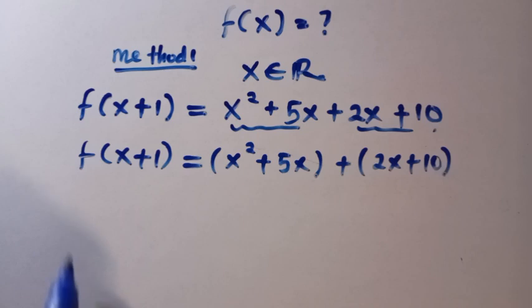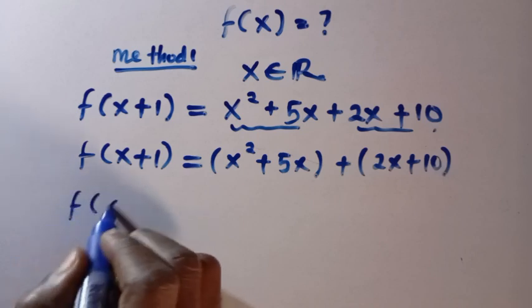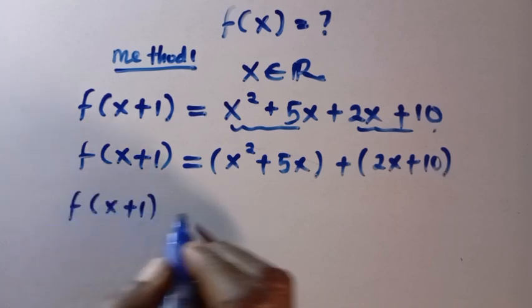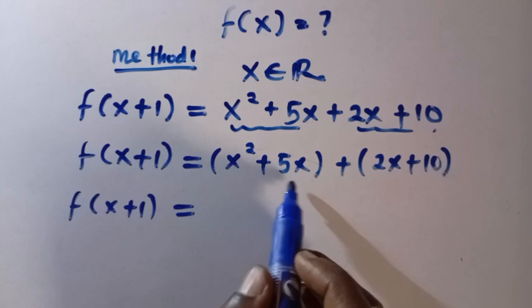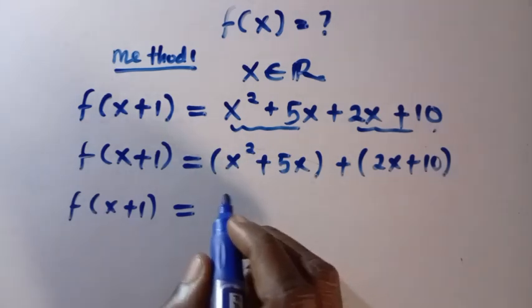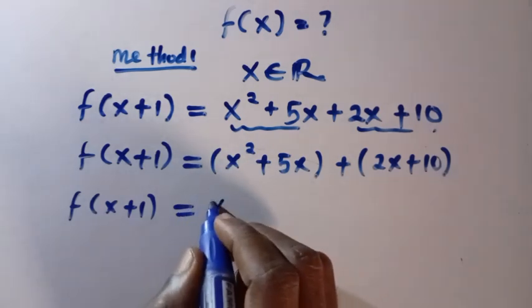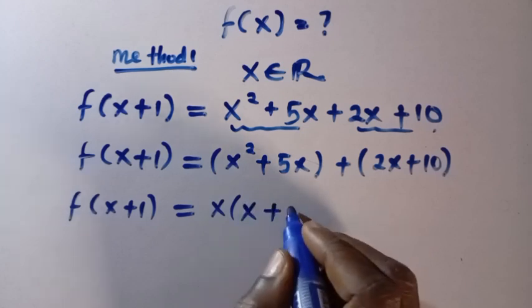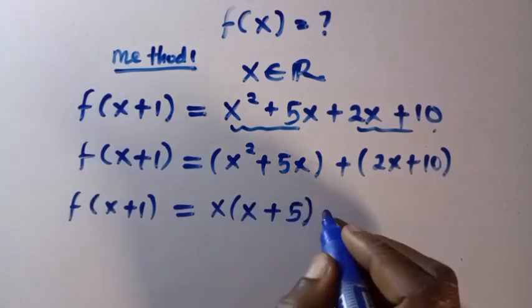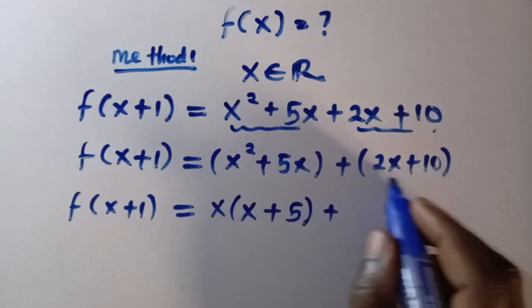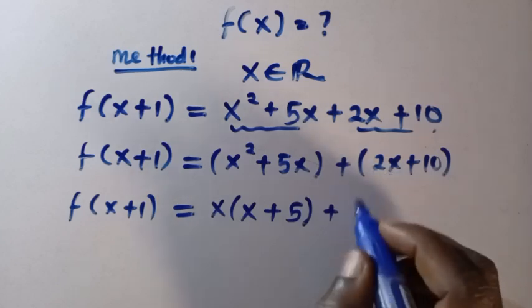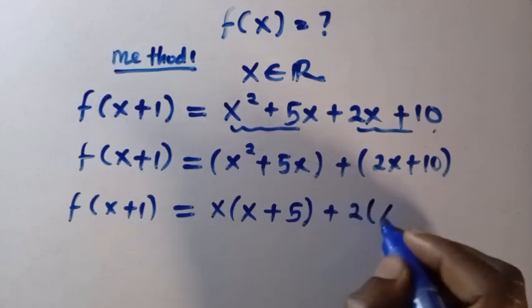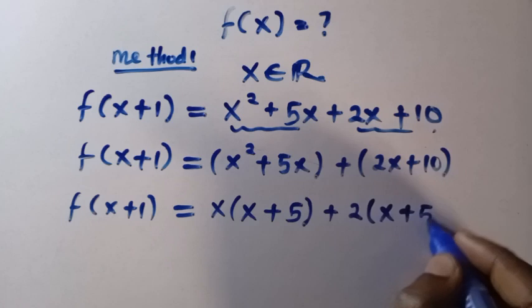Then, so after we have grouped it, let's say we have f of x plus 1, this equals, so let's factor out x from here. By factoring out x, we have x into bracket of x plus 5, plus, also 2 we go here. By factoring out 2, we have x plus x plus 5.